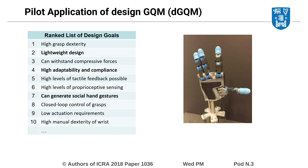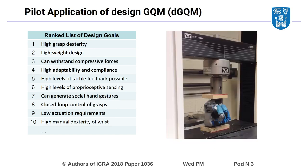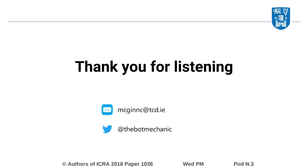As bottom-up design is iterative in nature, it is anticipated that the number of goals addressed by the design will increase with each iteration. Our research indicates that DGQM may provide a useful tool in robot design applications, although more case studies are needed to better understand the full extent of its usefulness.